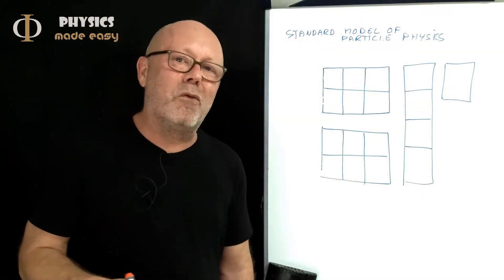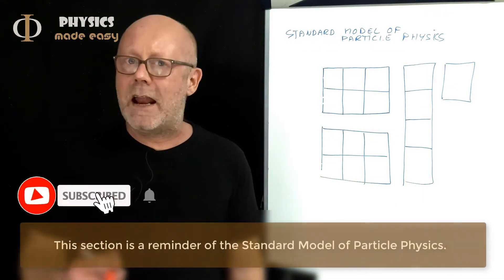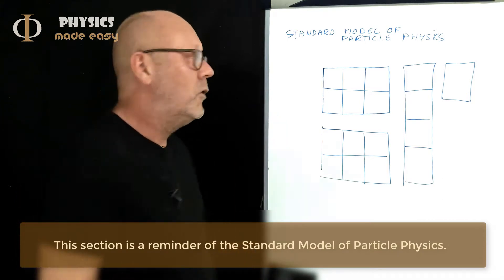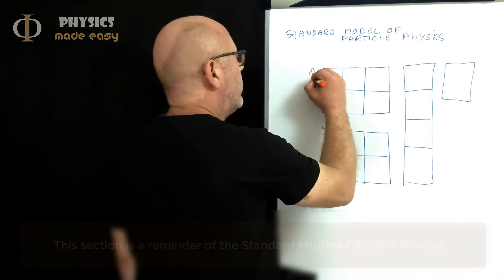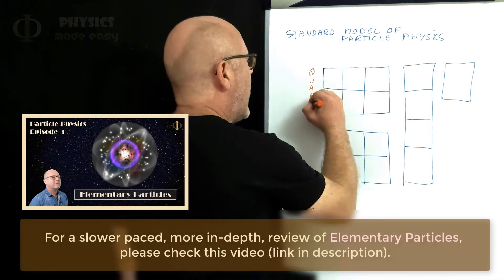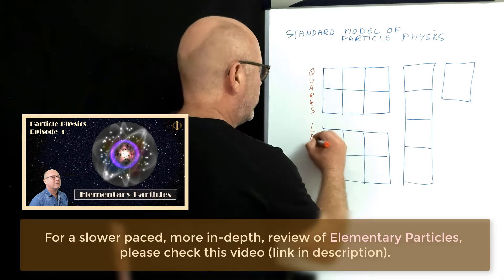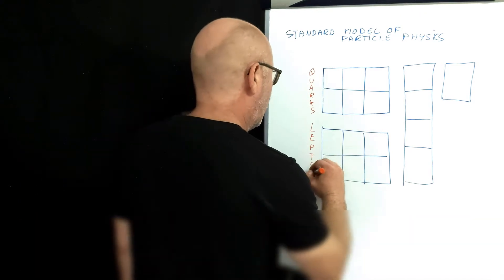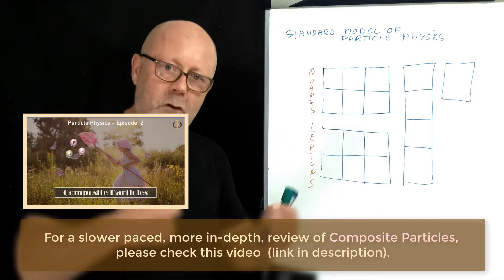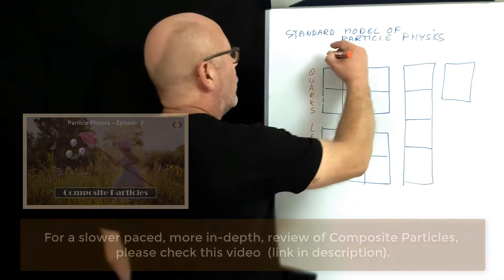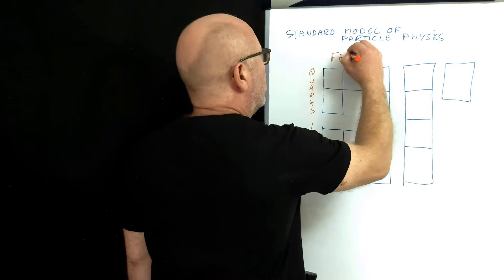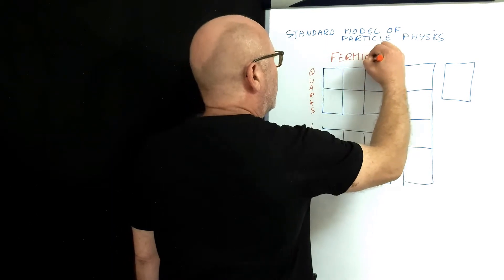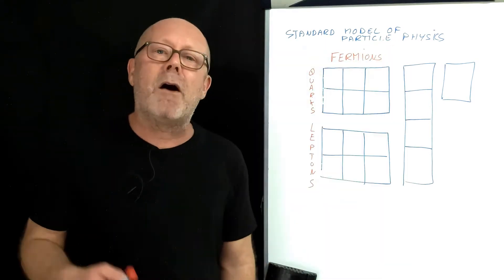The standard model of particle physics is made of 18 elementary particles. You have 6 quarks and 6 leptons. Quarks and leptons can be grouped in a family called fermions. Fermions are particles of matter.